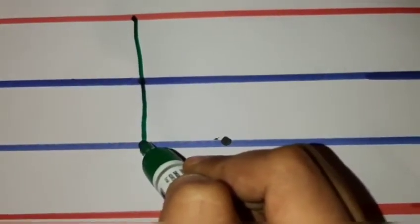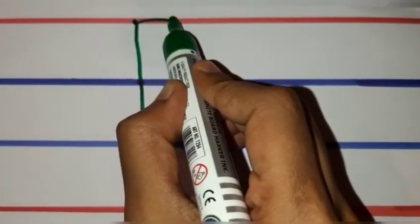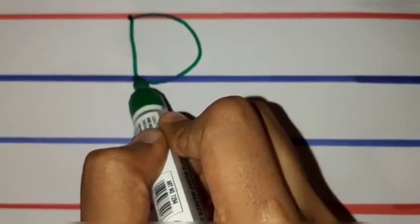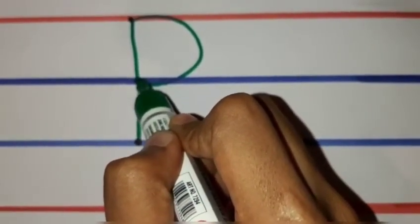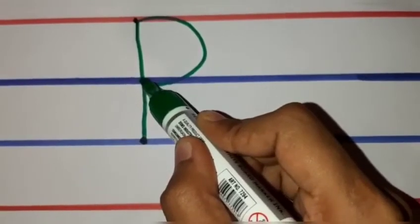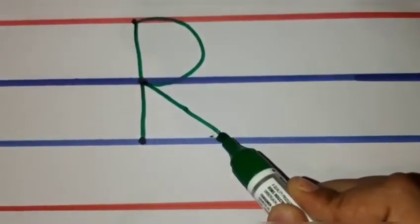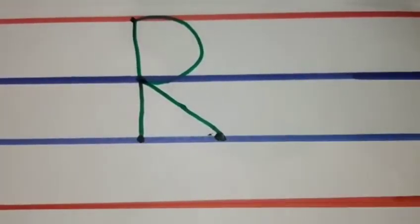Draw a right curve from the first line till the second line. Without lifting your hand, draw a slanting line from the second line till the third line. This is how we trace the letter R.